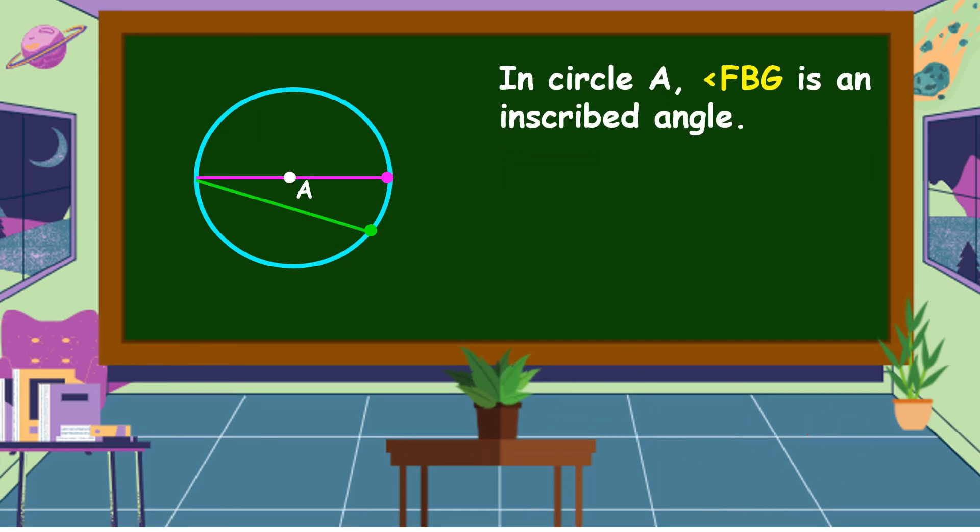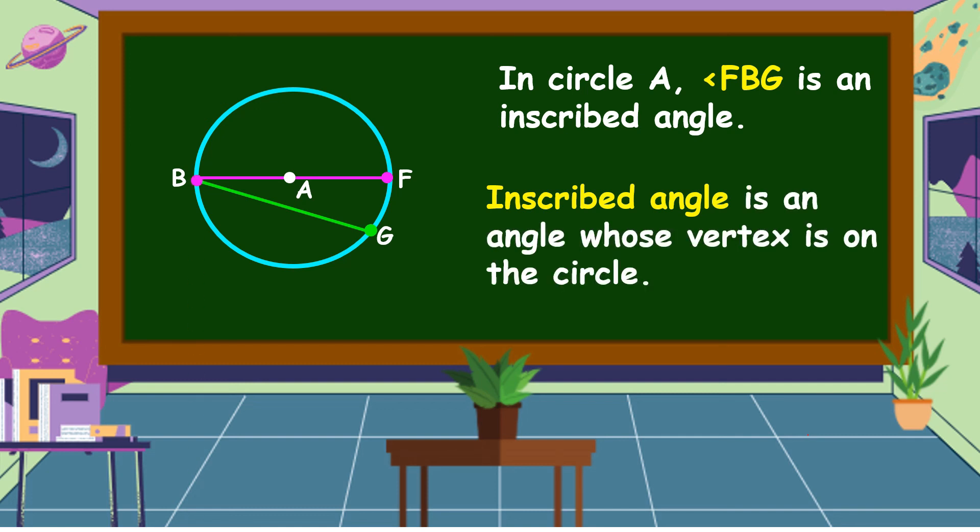In circle A, angle FBG is an inscribed angle. What is an inscribed angle? An inscribed angle is an angle whose vertex is on the circle.